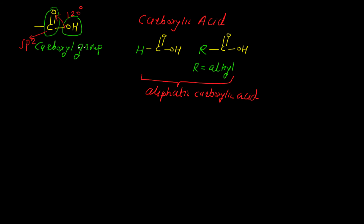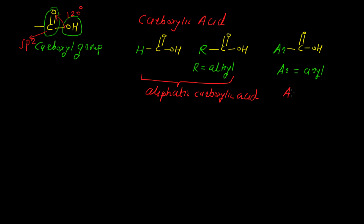This carboxyl group may also attach to an AR group — writing the structure: C double bond O, OH attached to AR, where AR indicates an aromatic group. Any such compound containing an aromatic group is known as aromatic carboxylic acid.